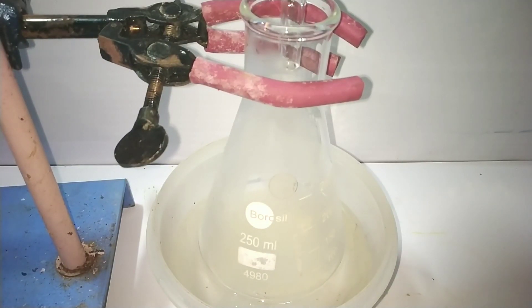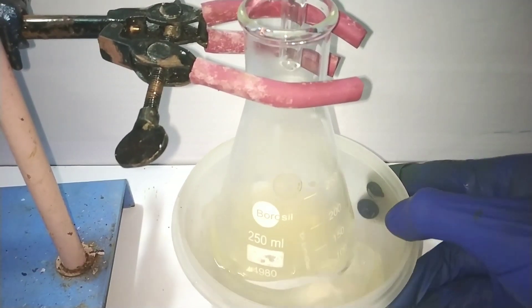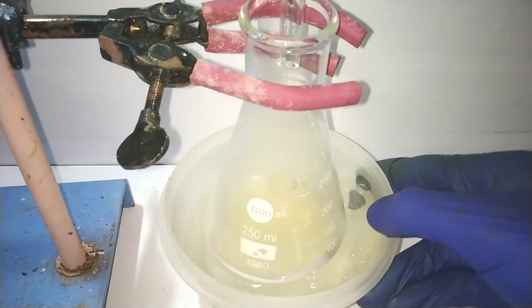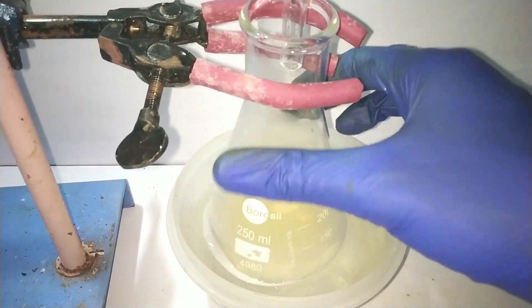Now slowly open the separatory funnel so that the acid alcohol mixture falls down dropwise into the sodium nitrite solution. Swirl the flask continuously. The complete addition took around 20 minutes.